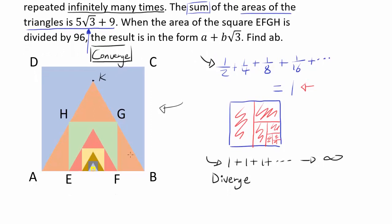Now let's try to actually answer the question. When the area of square EFGH is divided by 96 — a very specific number — the result is in the form A plus B times square root of 3, and we want to find AB. So we want to extract information from the sum of the areas of the equilateral triangles and use that to find the area of square EFGH.